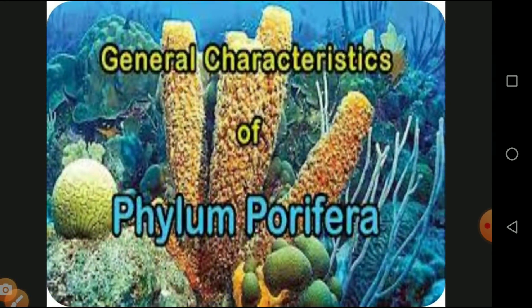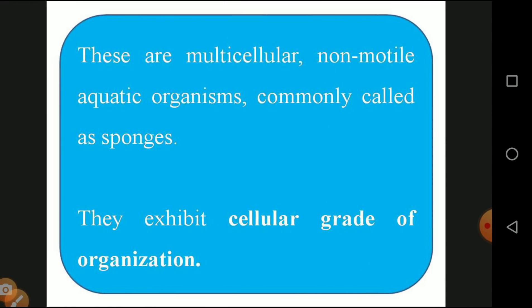Today we will look at some phyla. The first phylum of Invertebrata is called Porifera. From the name Porifera itself we get the meaning 'pores' — that means it is in the form of holes. It is a soft-bodied organism; the entire body is covered with minute pores. The best example of Porifera is sponges.